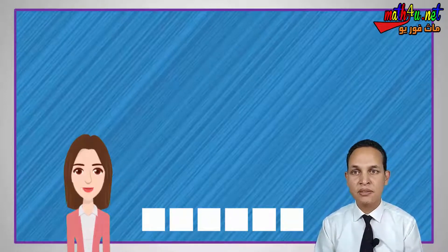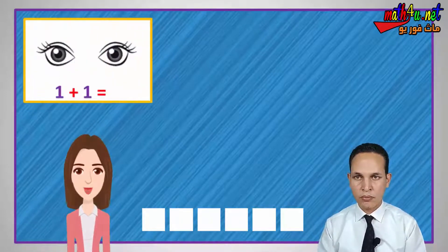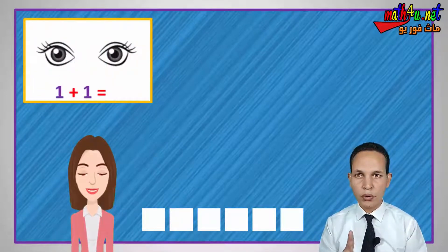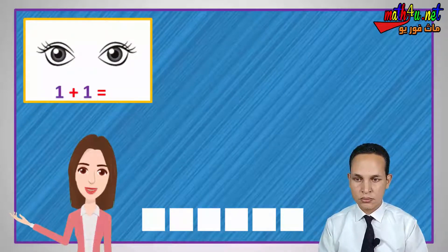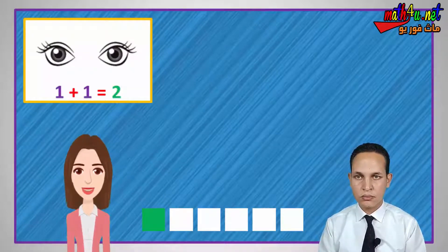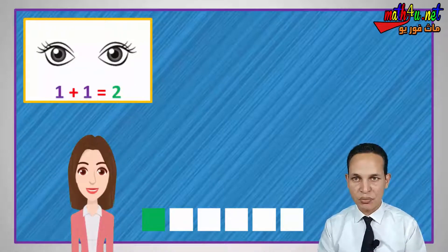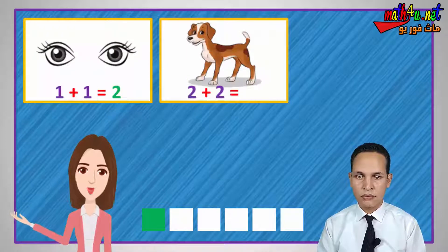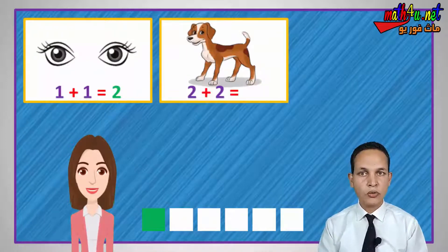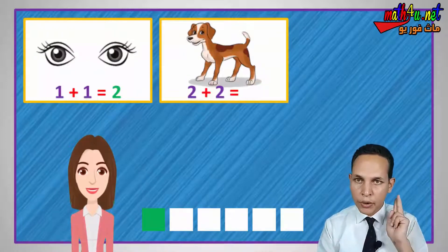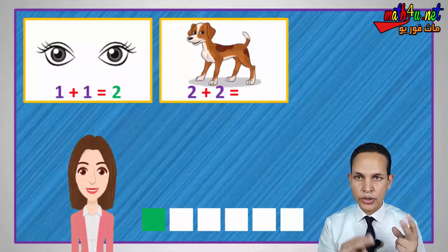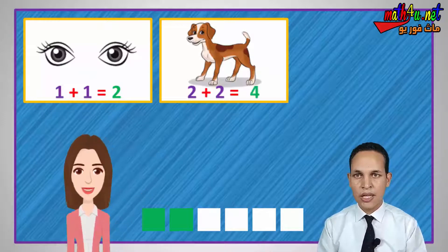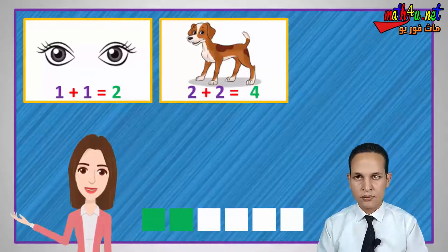Let's see, Ms. Dina — Hello! One plus one equals two. Excellent! One plus one equals two. Good, the square matches. Now, two plus two — what does two plus two equal? I will explain it: two plus two equals four.